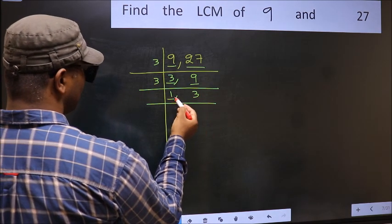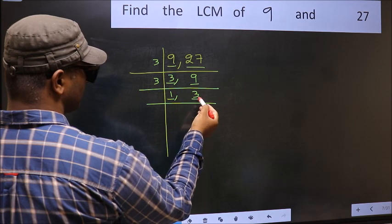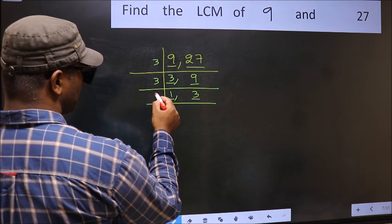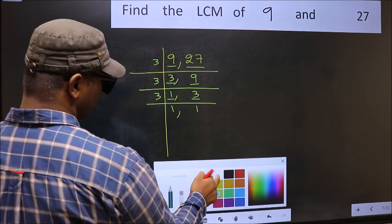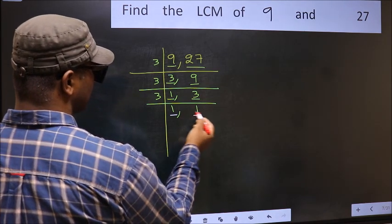Now we got 1 here. So focus on the next number 3. 3 is the prime number, so 3 times 1 is 3. So we got 1 in both places.